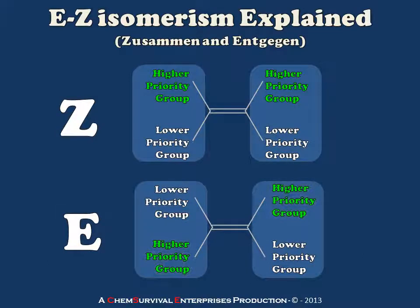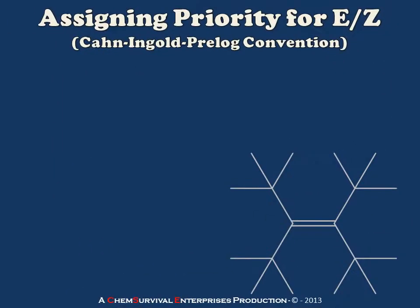These names come from German words for 'same' and 'opposite' — I won't attempt to pronounce them — but very clearly: Z means higher priority on the same side, and E means higher priority on opposite sides. Now the last thing we need before we start naming alkenes is to go through the Cahn-Ingold-Prelog convention for defining which group has the highest priority. In the case of naming alkenes, this begins with recognizing that we're only going to look at one half of the molecule at a time.